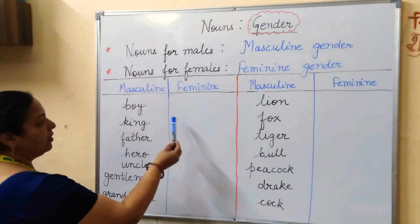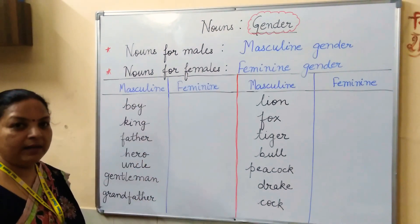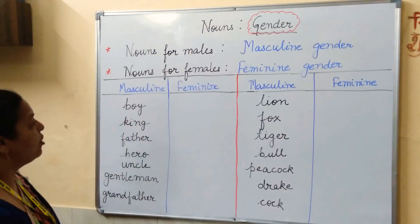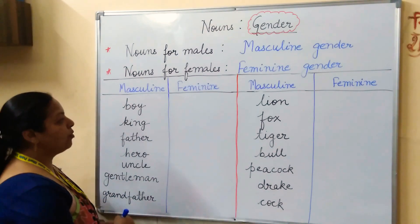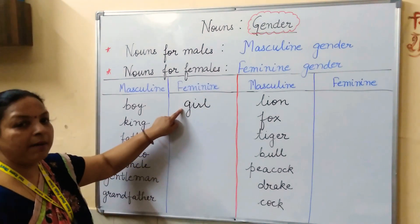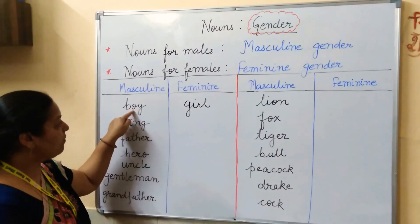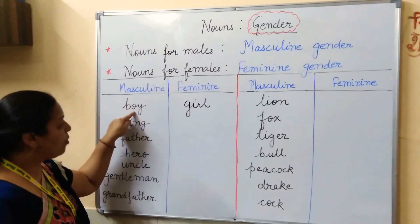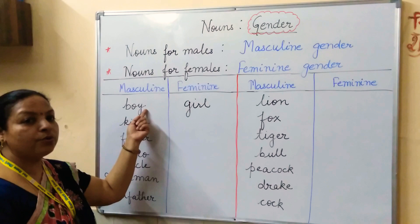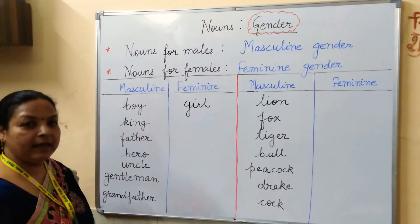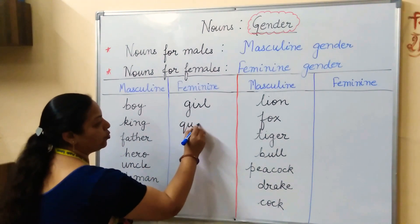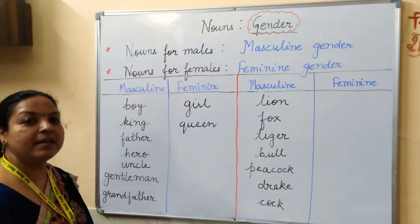Now we have their feminine gender equivalents as well. For boy, we will write girl. Girl comes in feminine gender and boy comes in masculine gender. For king, the feminine gender is queen.